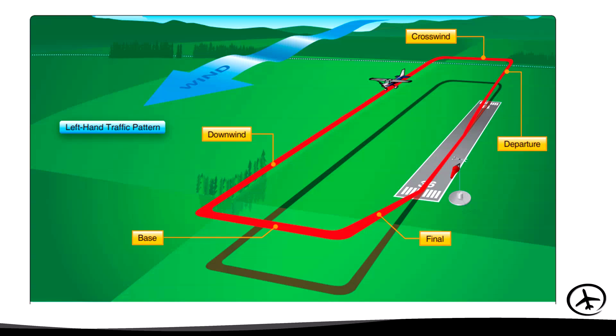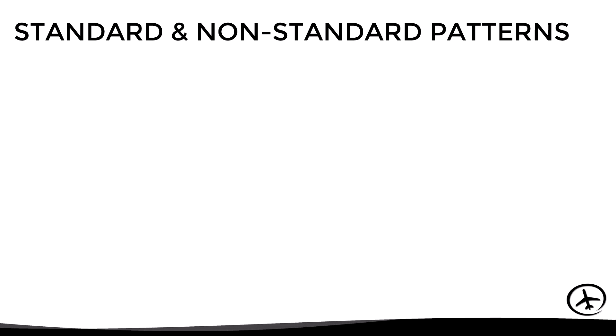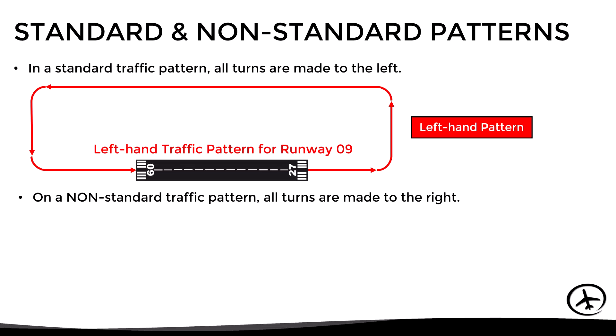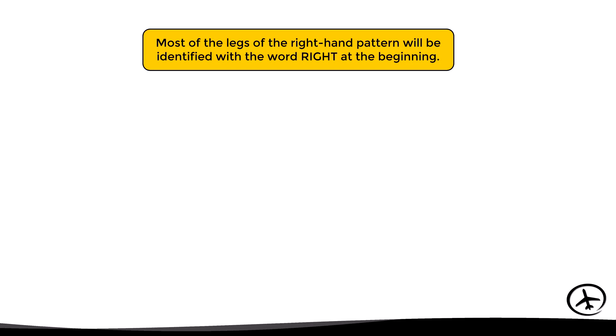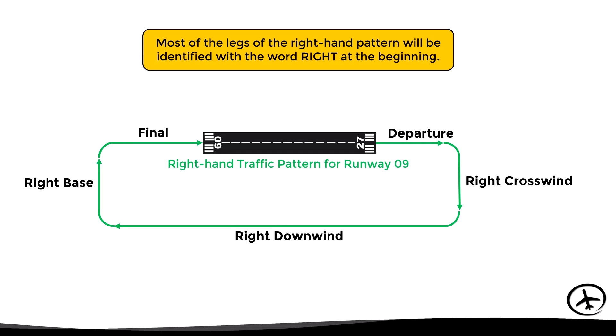Here we can see that this is a left-hand traffic pattern. As mentioned previously, we can fly either a left pattern or a right pattern for a particular runway. In a standard traffic pattern all the turns are made to the left — hence the name left-hand pattern — while in a non-standard traffic pattern all the turns are made to the right — hence the name right-hand pattern.